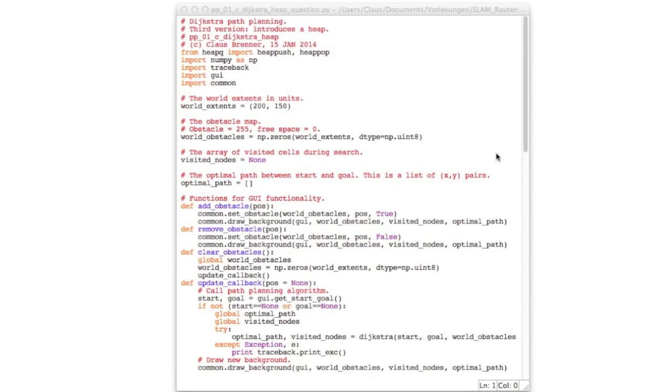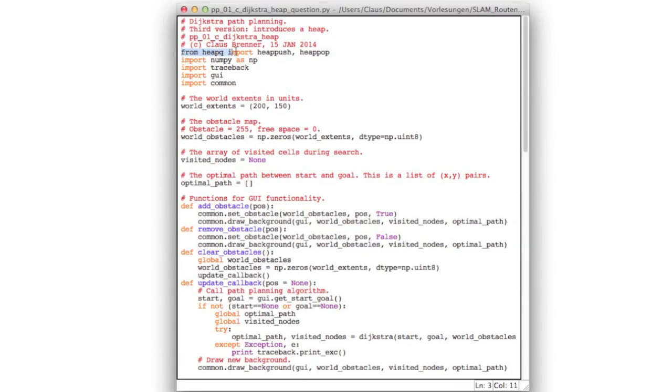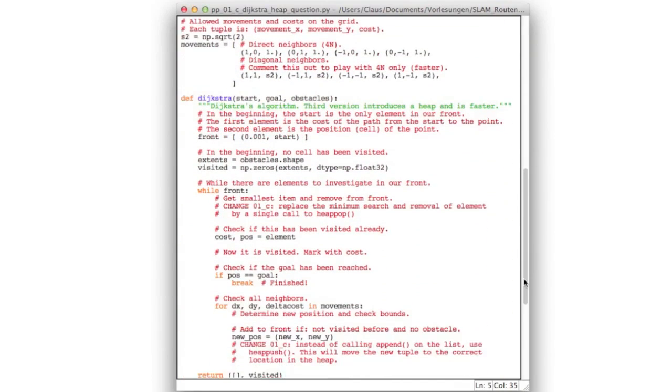Let's have a look at the code you'll have to implement. It's now PPO1C and it imports two functions from heap queue, namely heap push and heap pop. Down here in the main algorithm, there's only two changes to be made. Namely, replace your minimum search and remove by a single call to heap pop and replace your call to append by a call to heap push. That is all there is to do. Now please implement this.